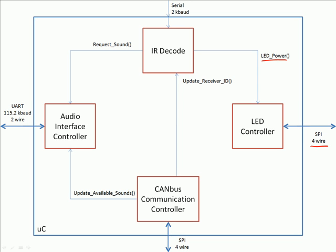To sum up: our external interfaces are defined and should map perfectly to any associated hardware block diagram. The blocks are separated by function names — IR decode can request a sound from the audio interface controller, the CAN bus communication controller can update the audio interface controller and receiver ID, and the IR decoder can change the LED lights. Reading the function names gives you a sense of how the system works. If you needed to change or replace a block, you'd just look up the public function interfaces to know how to use them correctly. This sums up everything you need to know about software block diagrams.